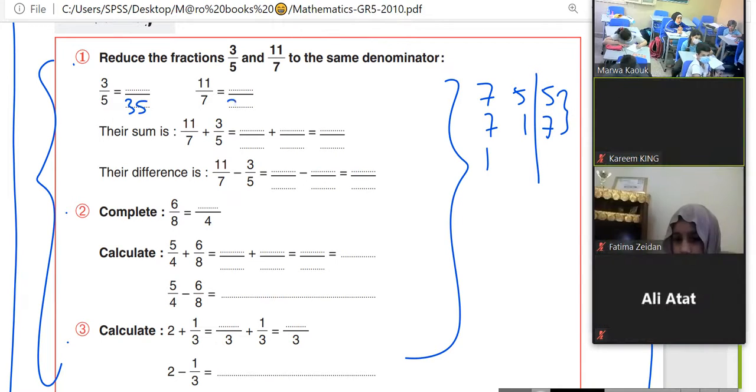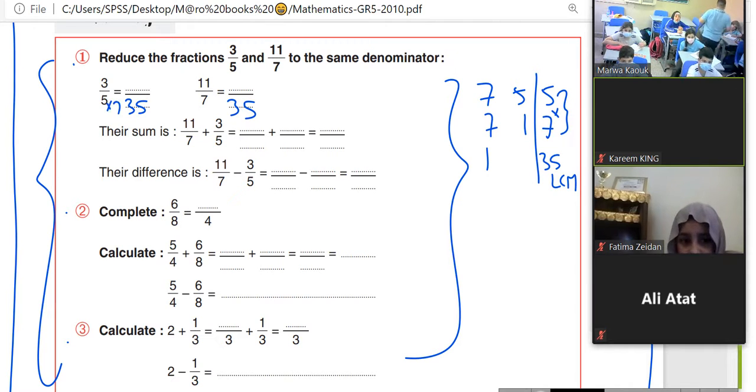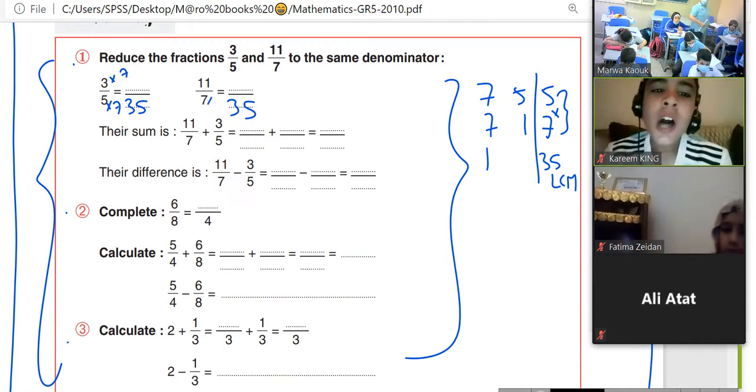So it should have here 35 and here 35. Since 5 times 7 equals 35, we multiply 5 by 7 and 7 by 5.